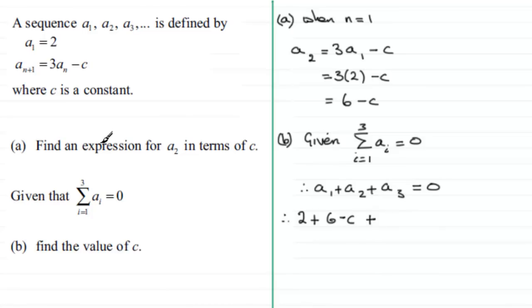Using the rule, when n equals 2, we get a₃ = 3a₂ - c. So a₃ is 3 times a₂ minus c, and that's going to total 0.